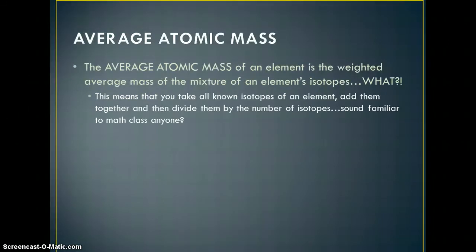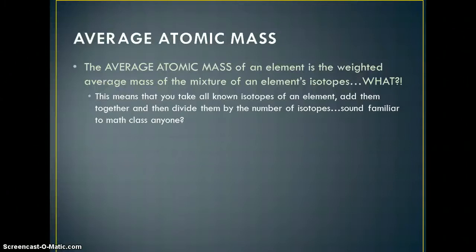Next is the average atomic mass, which is the weighted average mass of a mixture of an element's isotopes. Basically, you take all the known isotopes of an element — all the atoms that differ in numbers of neutrons — add those masses together, and divide by the number of isotopes. That gives you an average, which is why the periodic table shows a decimal as the bottom number.